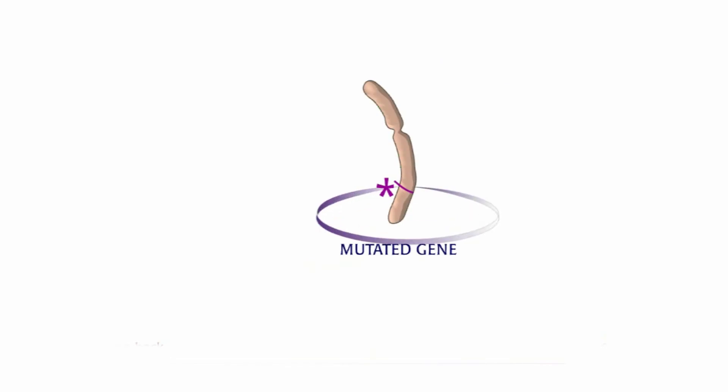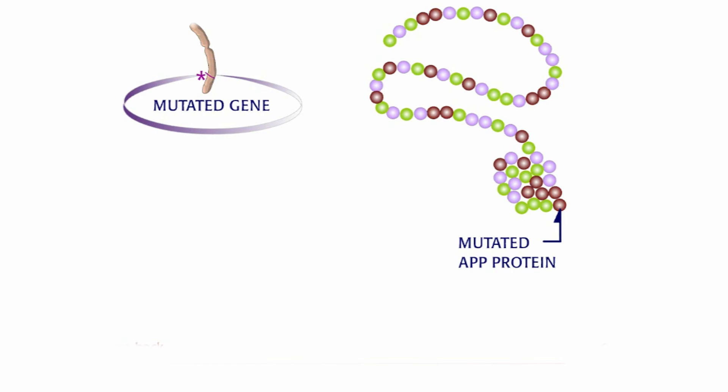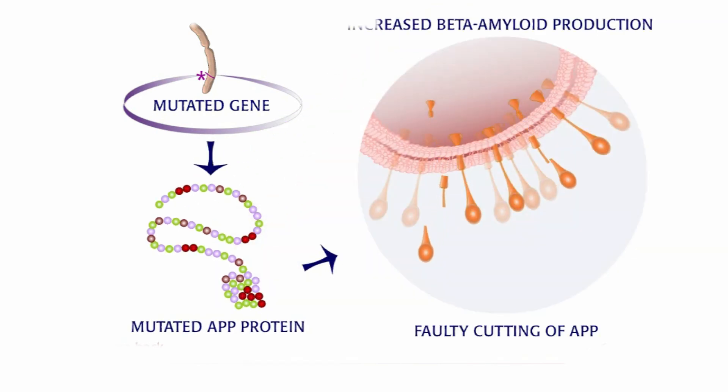Mutations in APP gene on chromosome 21 can produce mutated APP protein that is no longer cut properly. This can lead to increased amounts of beta amyloid.